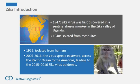Zika virus was first discovered in a sentinel rhesus monkey in the Zika Valley of Uganda in 1947, and subsequently isolated from mosquitoes in 1948 and from humans in 1952 from Uganda and Tanzania. After that, there were only a few infected cases reported in Africa and South Asia for a long period of time, until 2007 when it caused the first large outbreak of disease on Yap Island in Micronesia.